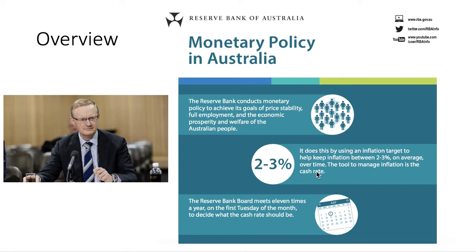They've got the cash rate and we'll look at how they use that to cause a ripple or chain of events through the interest rates. They meet eleven times a year on the first Tuesday of the month to decide what the cash rate should be. They release the minutes of the meeting and the statement on monetary policy — they're very clear about what they're doing and why. They could increase it by 0.25%, decrease it by 0.25%, or leave it the same. Usually they change it by 0.25% unless there's an extreme situation like during the GFC where they had to cut it by a full percentage point a few times.